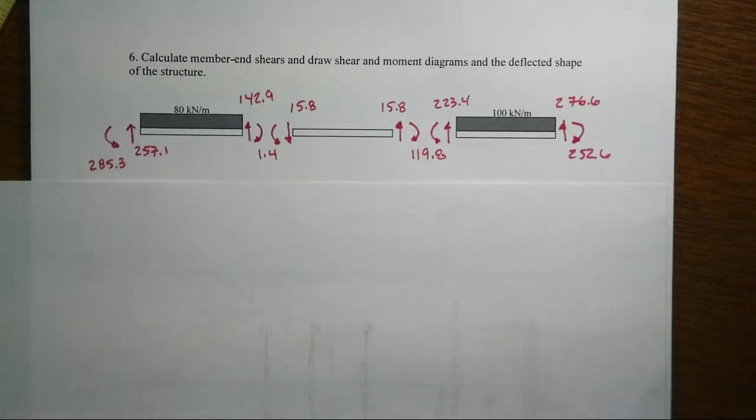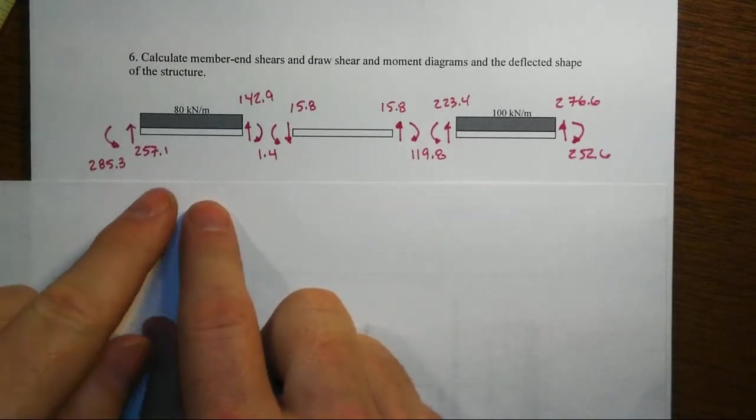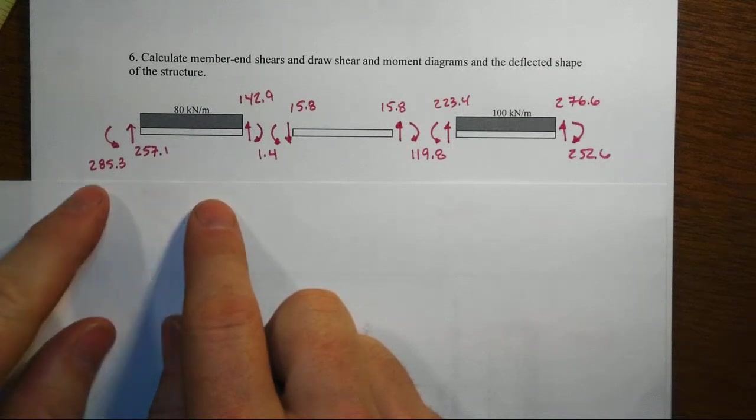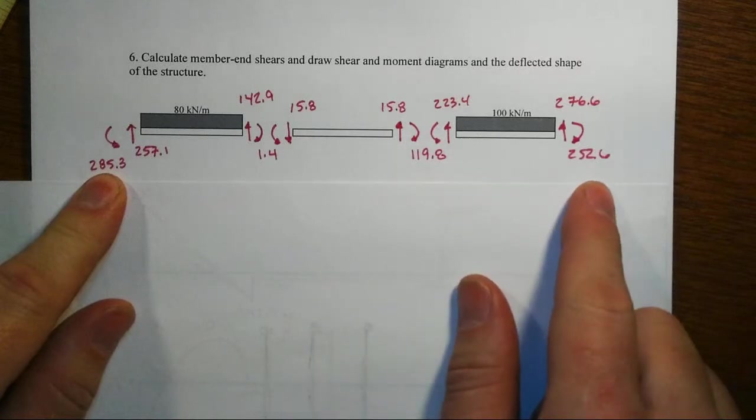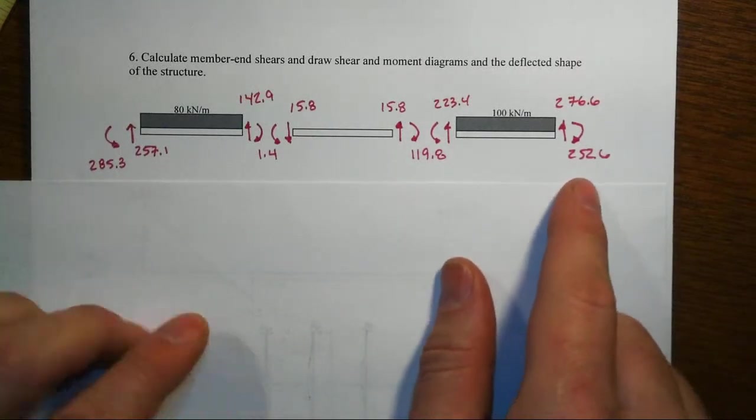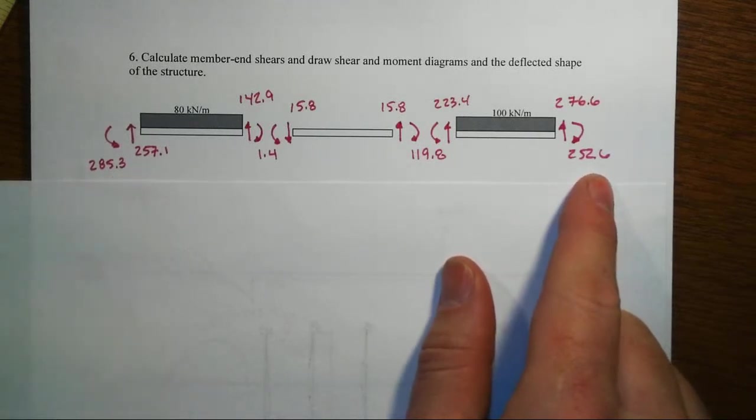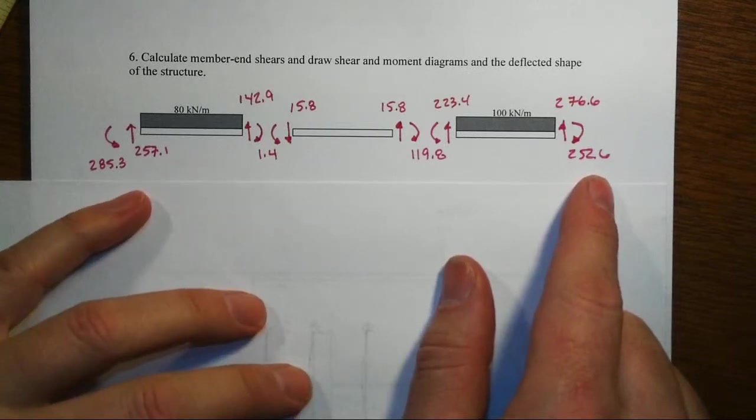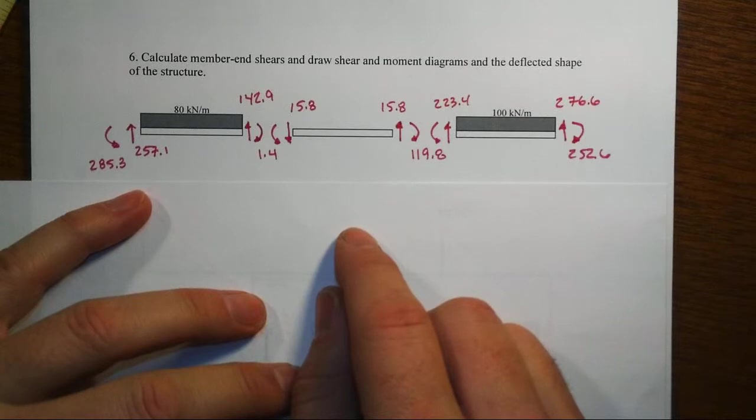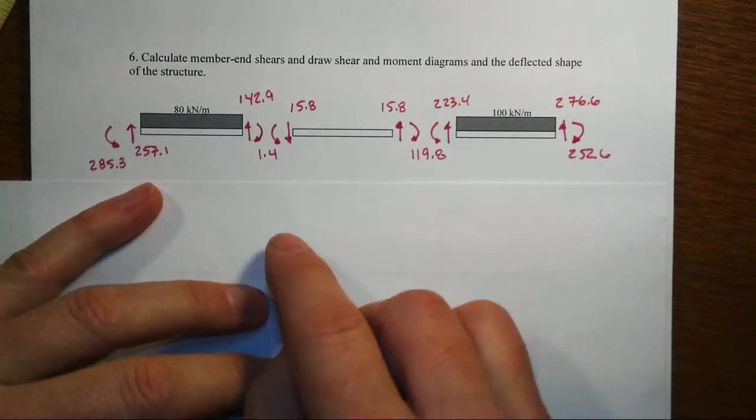As we wrap up and complete this slope deflection example in this multi-span beam, in the previous step we got to the point where we had rewritten the member end moments, showing how they physically act on the various member ends. We have rounded those numbers to the nearest tenth of a kilonewton meter. That will actually create a small problem for us if we're really precise about the shear moment diagrams.